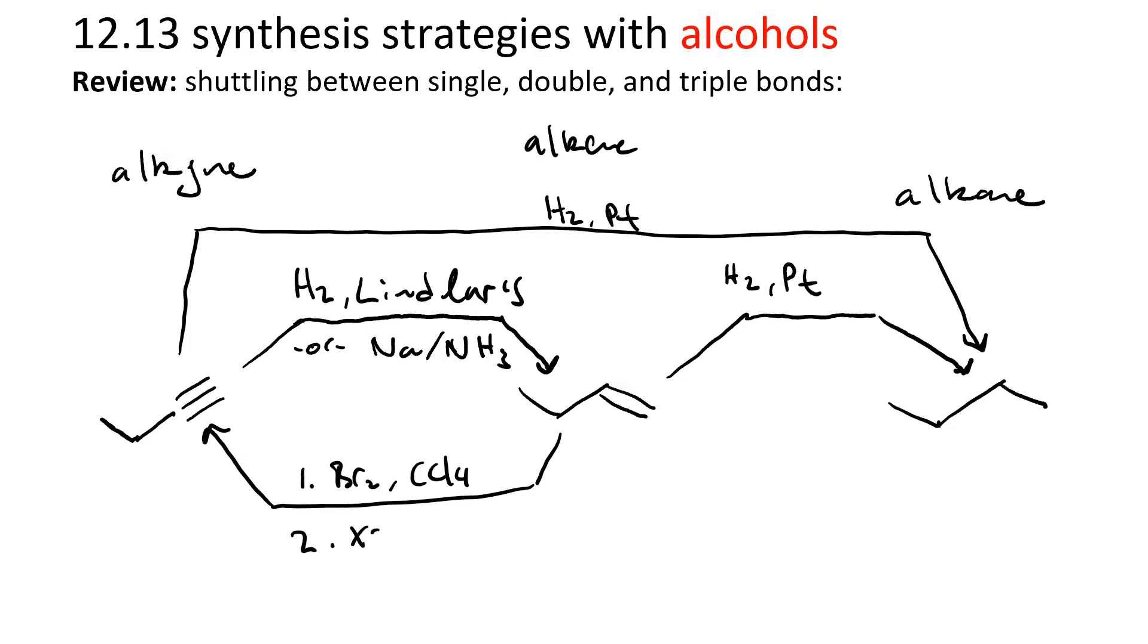To get the vicinal dibromide. Then we'd use excess sodium amide. That would take us to the alkyne ion. And then we'd use H2O as a mild acid to protonate the alkyne ion.